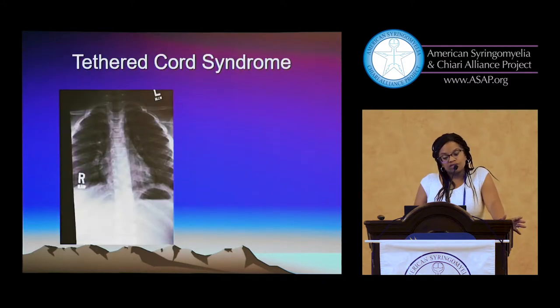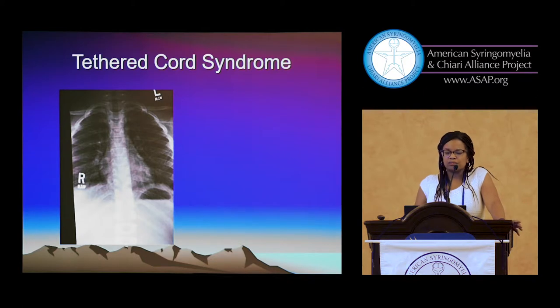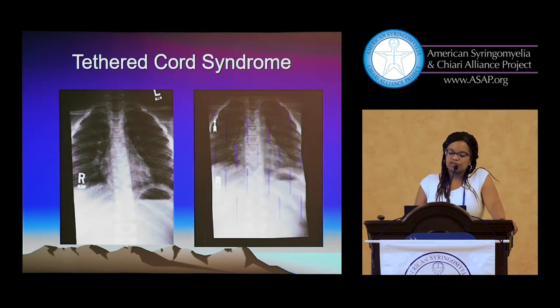For scoliosis — this is a young boy who presented with progressive scoliosis. After untethering, his spine straightened nicely.